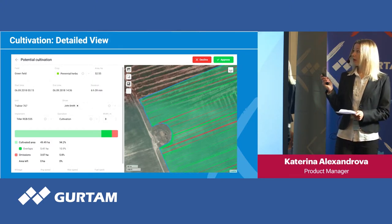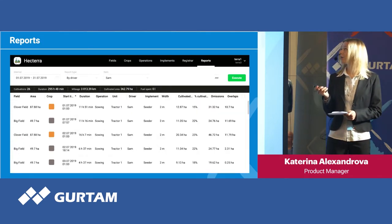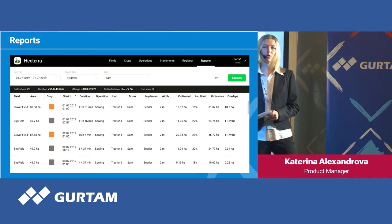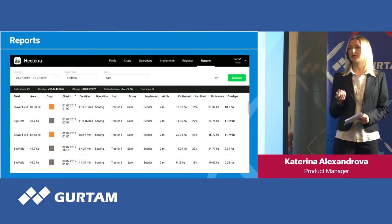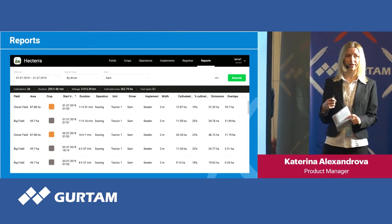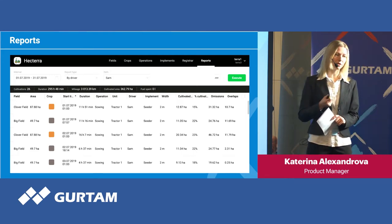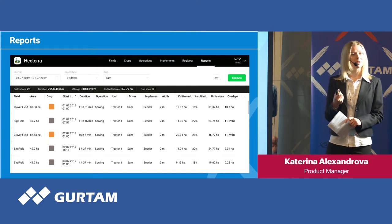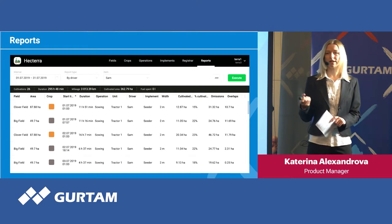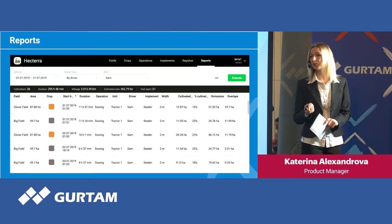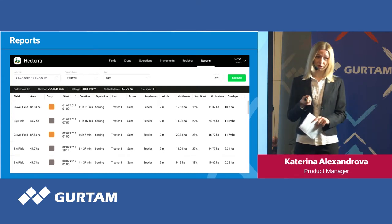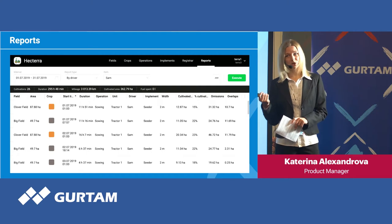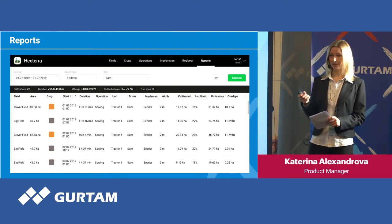After approval, the cultivation gets into the database and can be queried in reports. There are different kinds of reports — by driver, by field, by crop, and so on. Reports contain summarized statistical information about the whole period, and the detailed view of each cultivation is also available in reports. A report can be exported to a CSV file and opened in Excel or another system. Most importantly, all information available in reports can be obtained through the API and transferred to other systems.